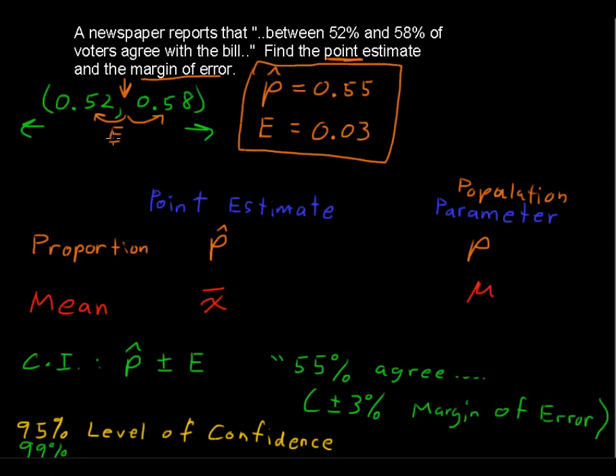But to do that, to be that much more sure, you need to cast a wider net. You need to have your boundaries farther apart. So that then would give you a larger margin of error.